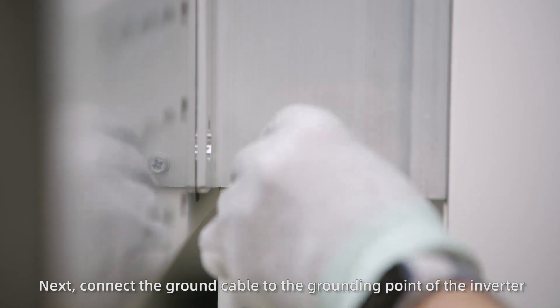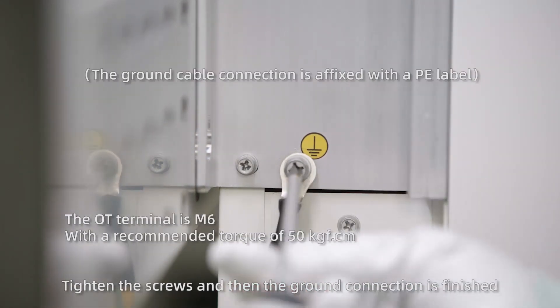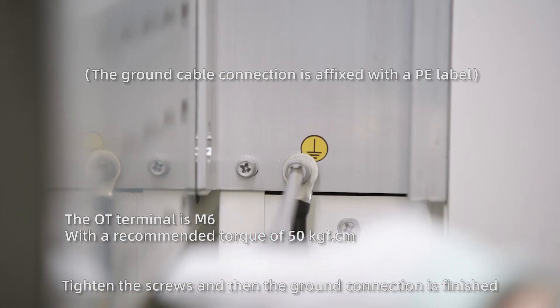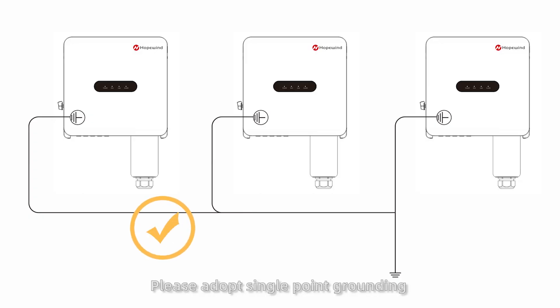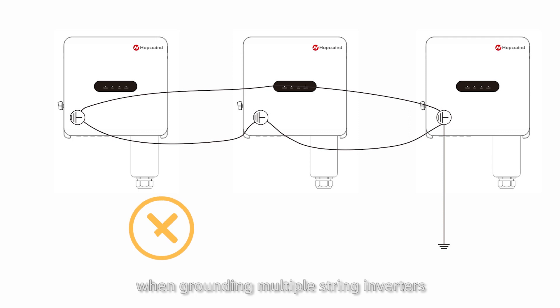Next, connect the ground cable to the grounding point of the inverter. Tighten the screws and then the ground connection is finished. Please adopt single point grounding when grounding multiple string inverters.